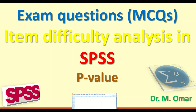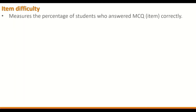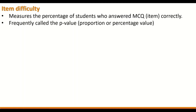Item difficulty analysis in SPSS for multiple-choice question exams is used to determine the p-value. Item difficulty measures the percentage of students who answered a multiple-choice question correctly. It is frequently called the p-value, proportion, or percentage value.